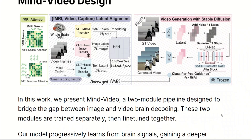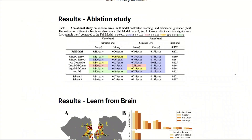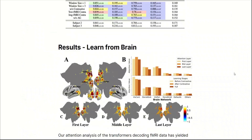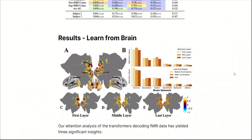In order to do this, they're proposing a two-module pipeline designed to bridge the gap between images and videos through brain decoding. Using their approach, they are able to get state-of-the-art results. Rather than going into a lot of technical details, let's look at some potential applications and their results.